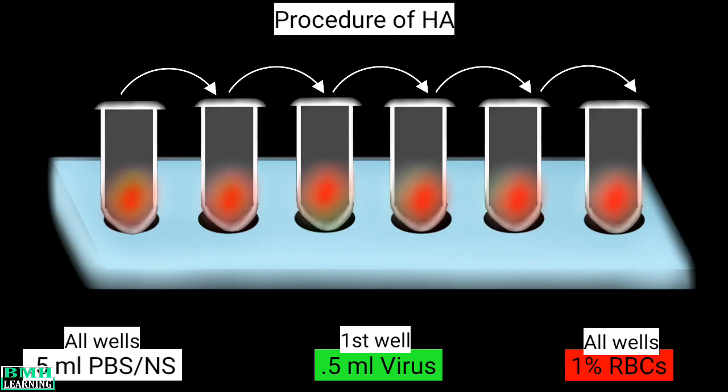We allow the RBCs to settle down for 30 minutes. The highest dilution at which clumping is observed is regarded as the actual titer of the sample. That was all — thanks for watching.